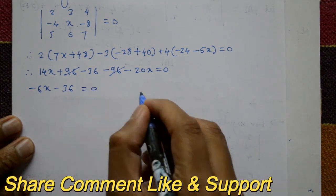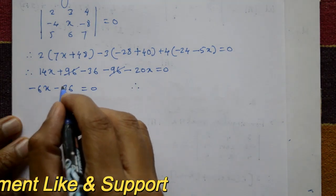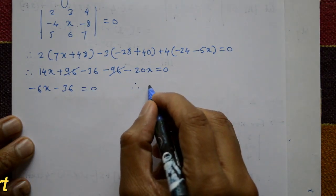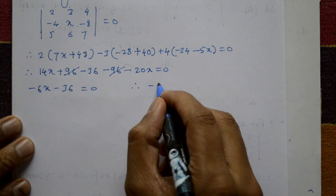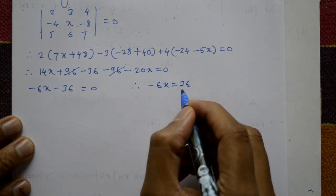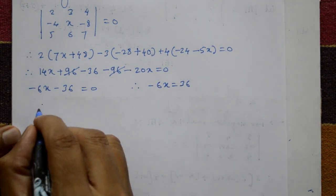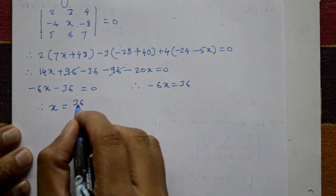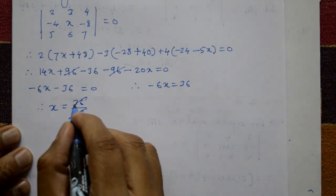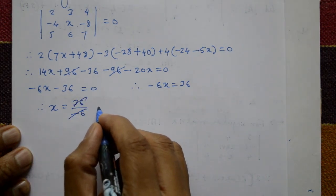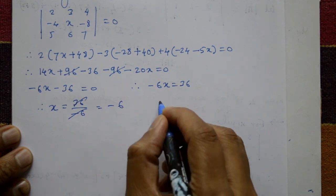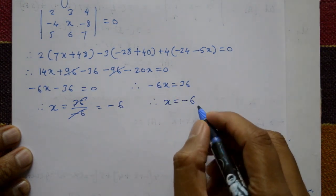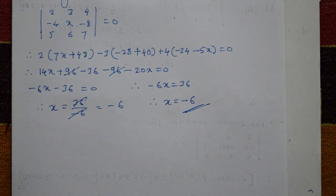So -6x minus 36 is equal to 0. Shifting 36 to the right-hand side, minus 6x equals 36. Therefore x equals -36 divided by -6. Cancel: 6 divides into 6, so x is equal to minus 6. This is the required x value.